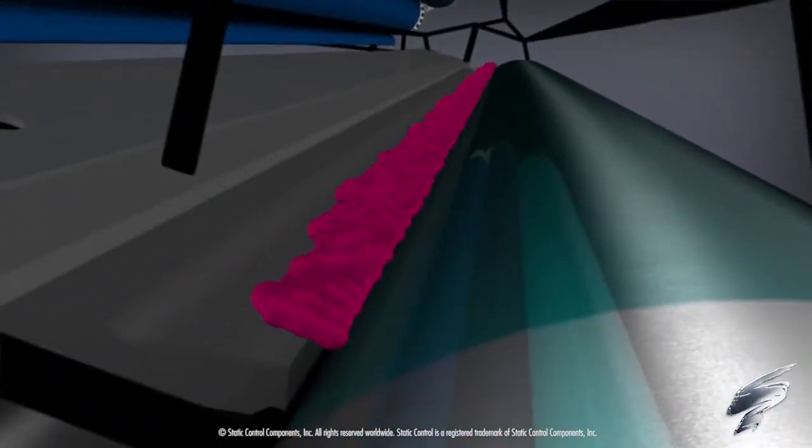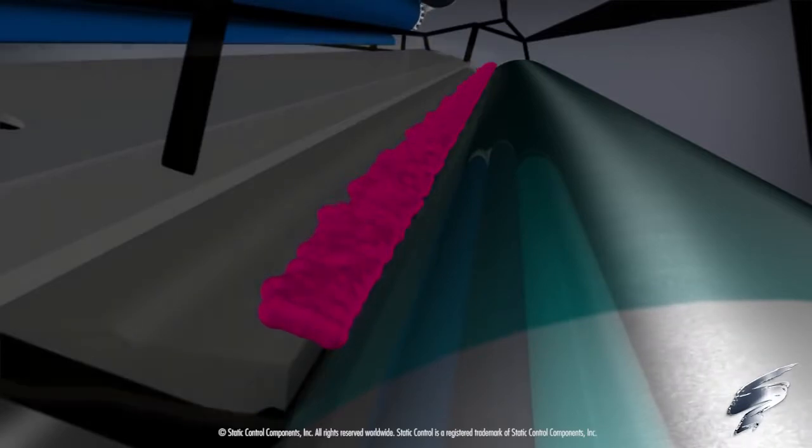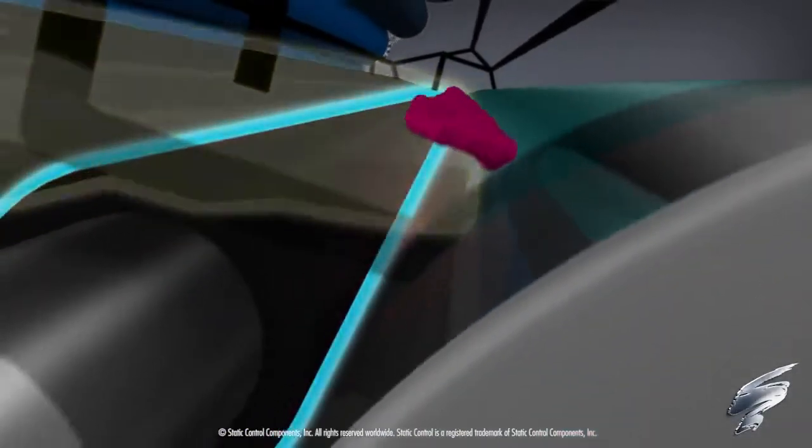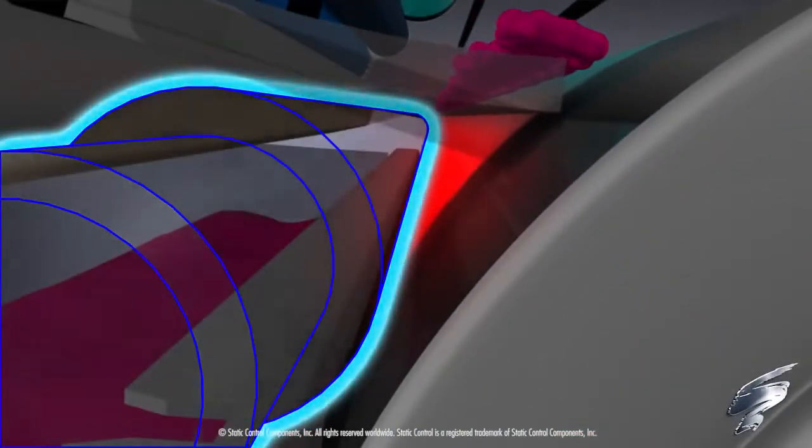Any toner remaining on the OPC drum is cleaned and moved to the waste bin by the wiper blade. The latent image on the OPC drum surface is erased by the PCR.